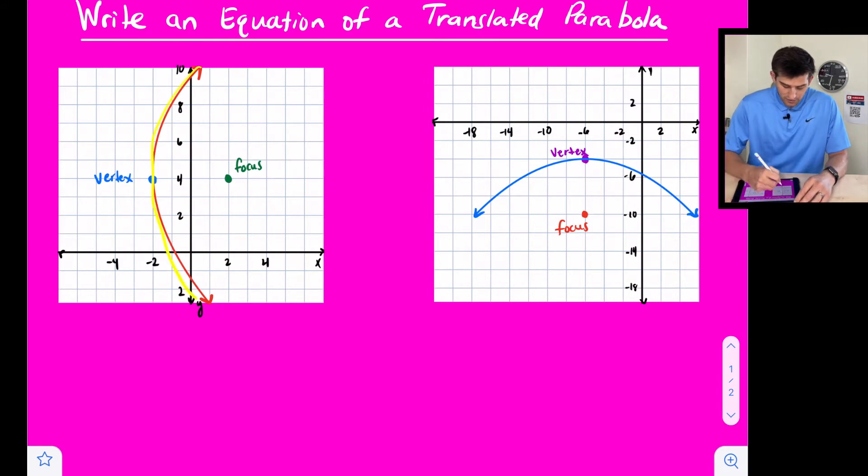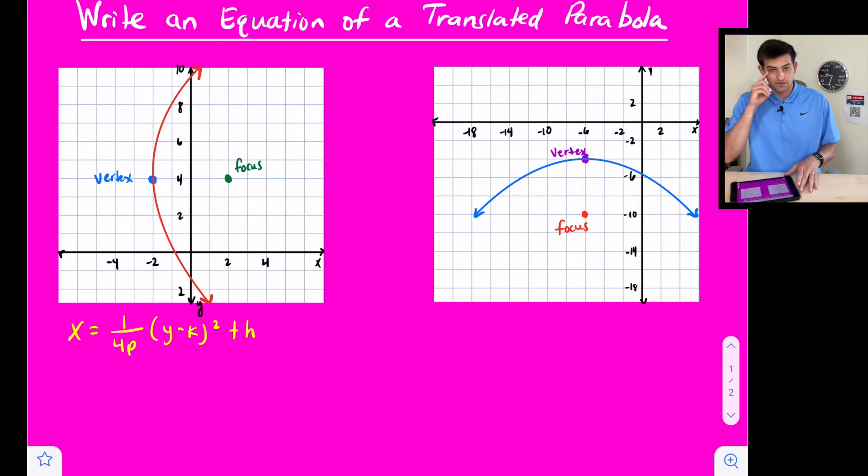Notice we have our parabola here in red, we have our vertex, and we have our focus. Since this parabola opens to the side, we want to write our equation with X equals. Our equation is 1 over 4P, and then we're going to write Y minus K quantity squared plus H. Whenever our parabola opens to the left or to the right, we have to not only switch X and Y, but we also have to switch H and K.